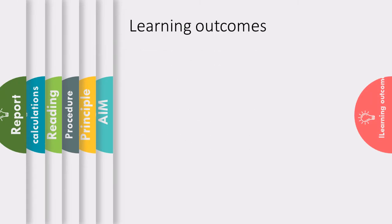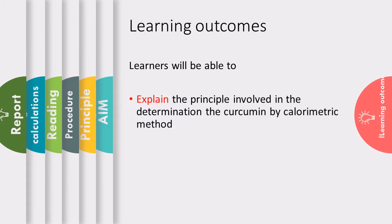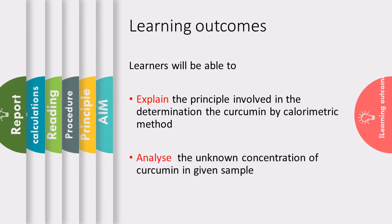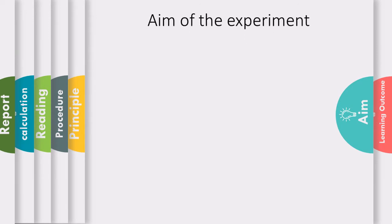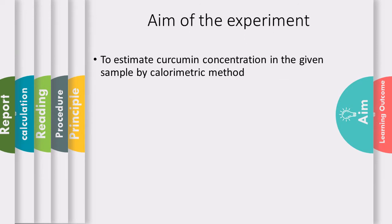Let us see the learning objectives or learning outcomes. The learner will be able to explain the principle involved in the determination of curcumin by colorimetric method, and analyze the unknown concentration of curcumin in a given sample. The aim of the experiment is to estimate the curcumin concentration in the given sample by colorimetric method.